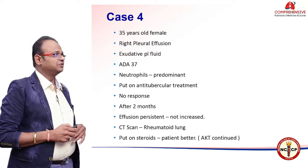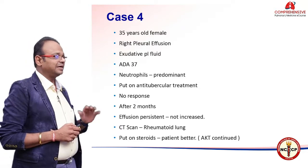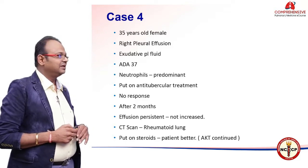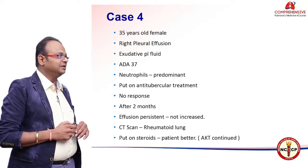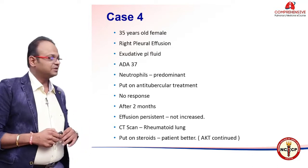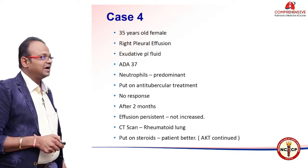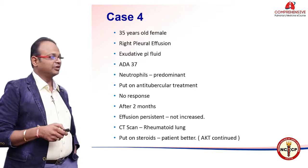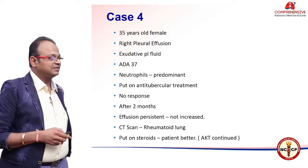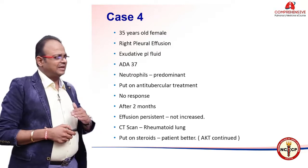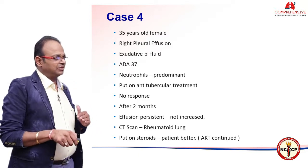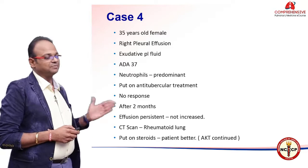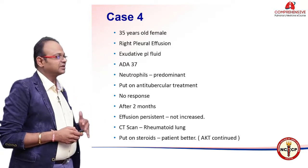Case 4: a 35-year-old female with right pleural effusion — exudative, ADA 37, neutrophilic predominant. She was put on AKT with no response. After 2 months, the effusion persisted but was not increasing. CT scan showed rheumatoid lung. She was put on steroids and improved. As would be expected, AKT was continued since she had already completed 2 months of therapy and was placed on the continuation phase.